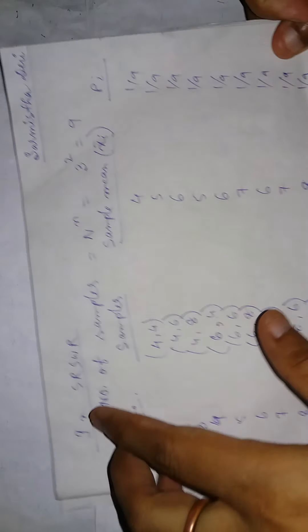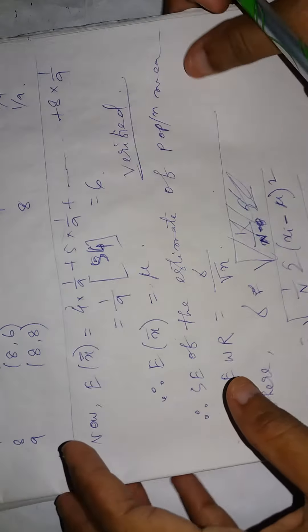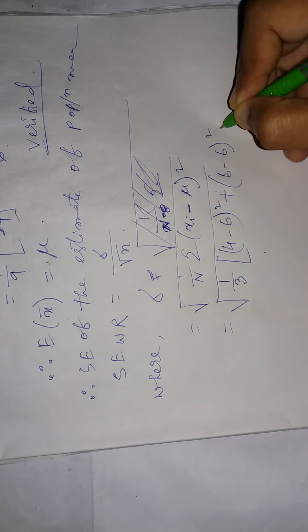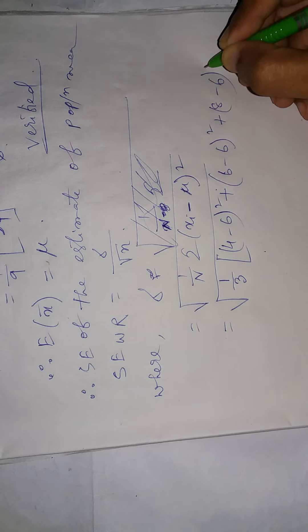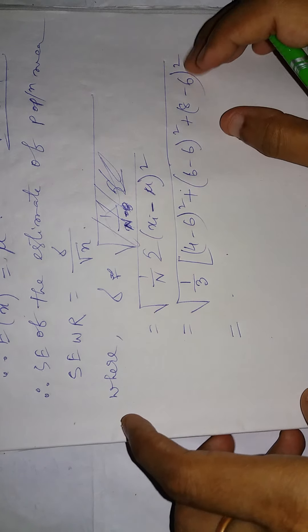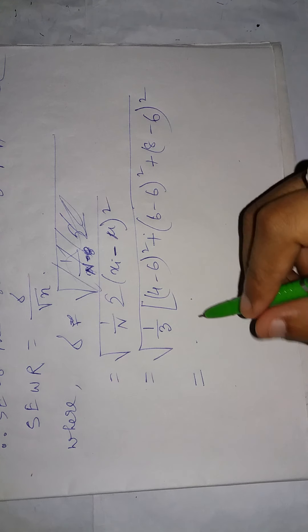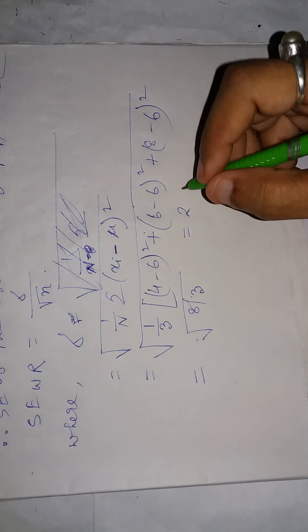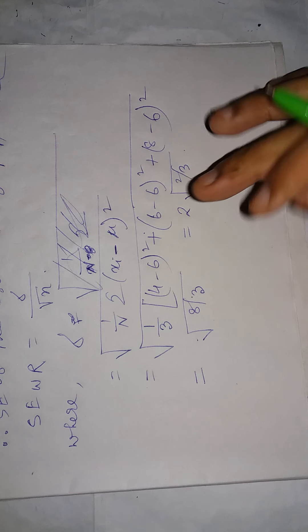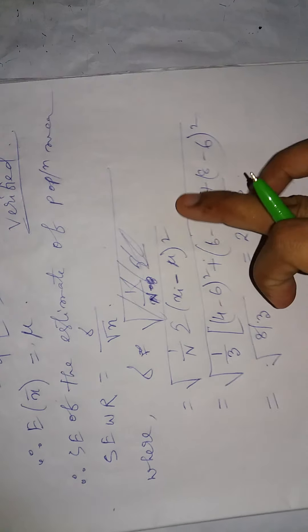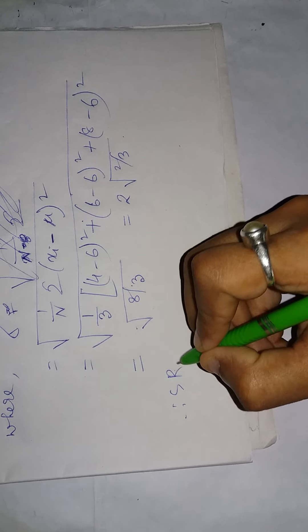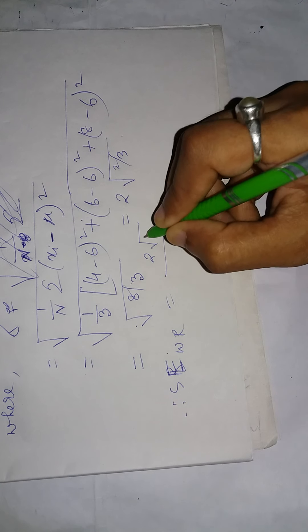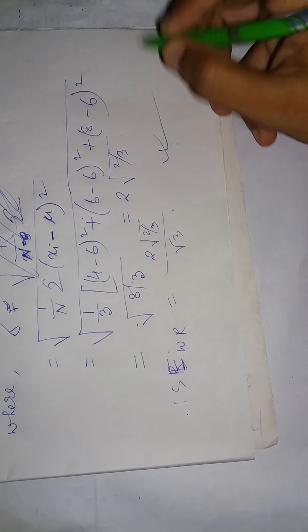Let me do the calculation. One by N, our N value is 3. xᵢ values are 4, 6, and 8. So we calculate (4 minus μ) squared plus (6 minus μ) squared plus (8 minus μ) squared. After calculation, sigma equals square root of 8 by 3. Therefore the standard error SE with replacement equals sigma by root n, which equals square root of 2 by 3.